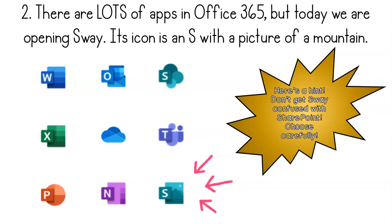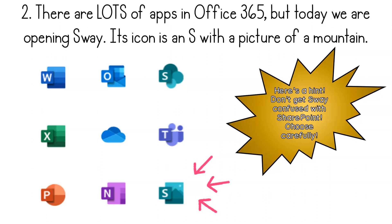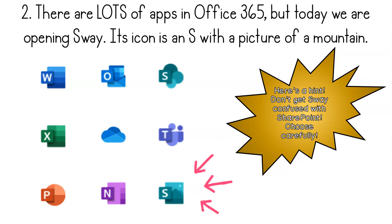Within Office 365, there are lots of apps, but today we're going to be opening Sway. It's an icon with an S that has a picture of a mountain. Don't get Sway confused with SharePoint — choose carefully. Notice SharePoint also has the letter S and a bunch of circles, but you specifically want the S with the mountain range. Pause this video if you need to and don't press play until you have Sway open.